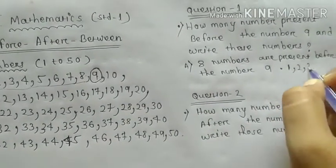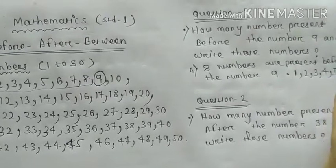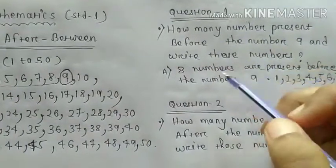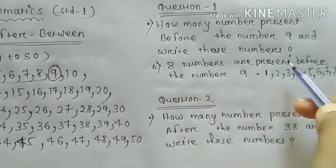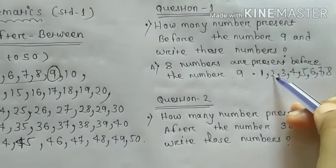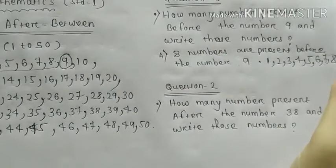Before the number 9, who could write? 1, 2, 3, 4, 5, 6, 7, 8. Done. 8 numbers are present before the number 9 and those numbers are what? 1, 2, 3, 4, 5, 6, 7, 8. Okay.